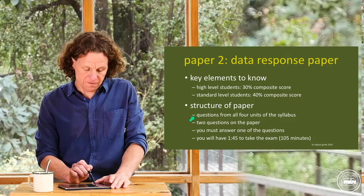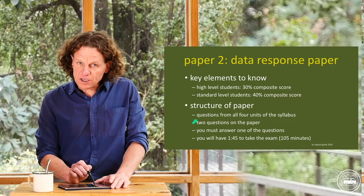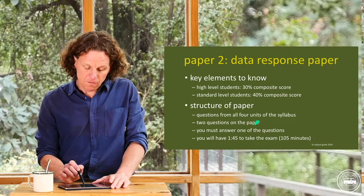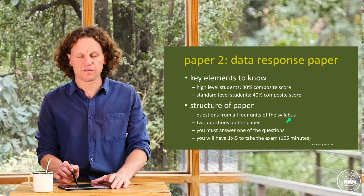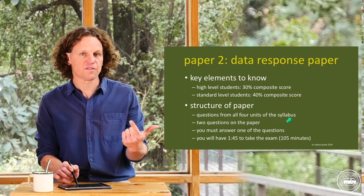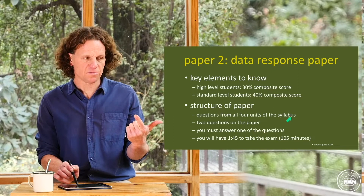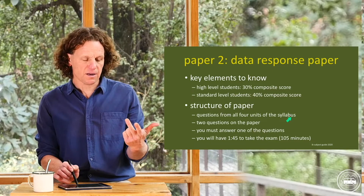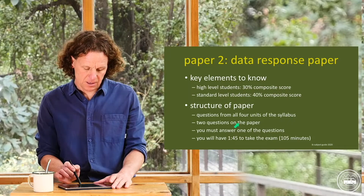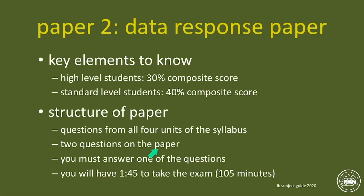What's the structure of the paper? Questions will come from all four units of the syllabus: introduction to economics, microeconomics — which if you're a high level student includes market power — macroeconomics, and global economy. Two questions are given to you on the paper and you must answer one of the two, so you get to choose. You'll have an hour and 45 minutes to take the exam, which is 105 minutes.